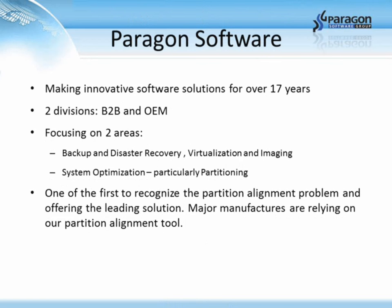At Paragon Software, we've been making software solutions for over 17 years, focusing on backup and disaster recovery, virtualization and imaging, and system optimization — particularly partitioning. We have a B2B division offering software licensing and services to small, medium, and Fortune 500 companies, as well as an OEM division. We were one of the first vendors to recognize the partition alignment problem, and major manufacturers including Dell, HP, and Toshiba are licensing our partition alignment tool for large 4K drive upgrade projects.